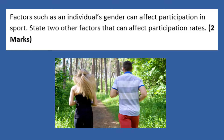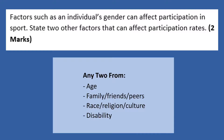This question states that factors such as an individual's gender can affect participation in sport. State two other factors that can affect participation rates. There are a few different answers we can choose from in order to get the two marks. We don't need to do any explaining — we just need to make some points.